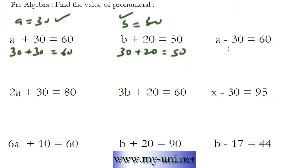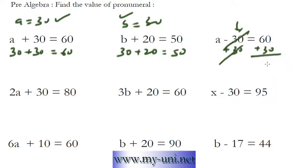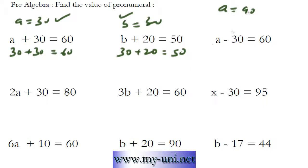Now this one is negative 30. To get rid of this number here, we can add 30 on this side of the equation. And when we do that, we have to add 30 on this side of the equation as well. So negative 30 and plus 30 will cancel out. 60 plus 30 is equal to 90. Value of A is equal to 90 here. And we can check our answer by replacing the value of A in this equation. So 90 minus 30 is equal to 60. Our answer is right.